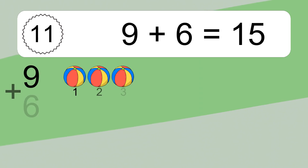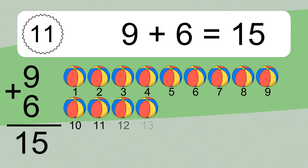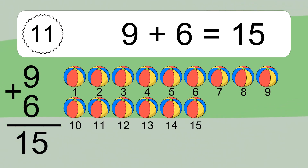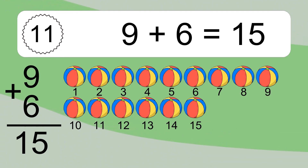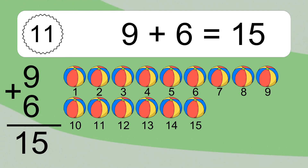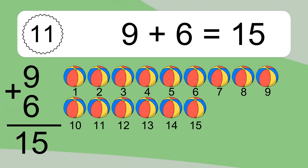9 plus 6 equals what? 9 plus 6 equals 15. Let's count it. 1, 2, 3, 4, 5, 6, 7, 8, 9, 10, 11, 12, 13, 14, 15.